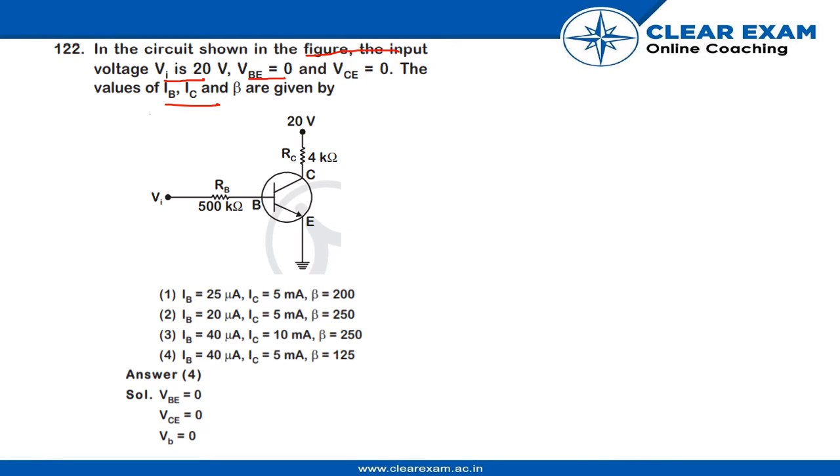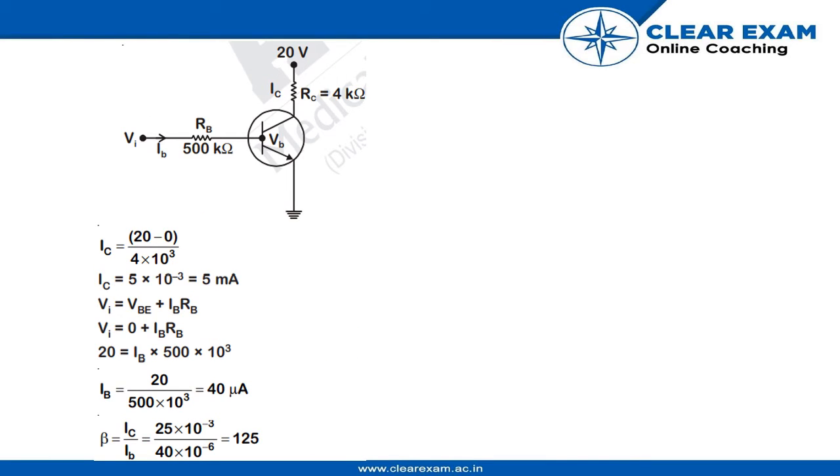As in the question we have been given that VBE equals to 0, VCE equals to 0, so VB would also be 0. We have a formula VI equals to IB RB plus VBE.